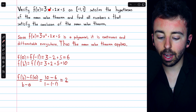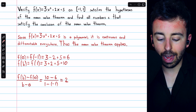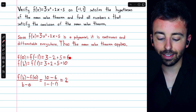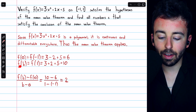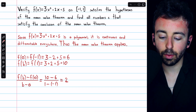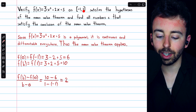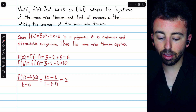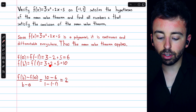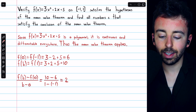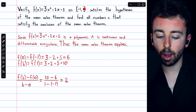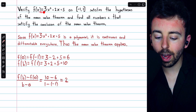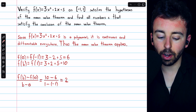Plugging negative one into our function, we have three times one, which is three, minus two plus five, so that is six. And then we calculate f of b, which is f of one — that's the value of the function at the end of the interval. And that's three plus two plus five, which is ten, from plugging one into the function.